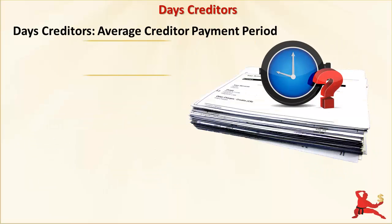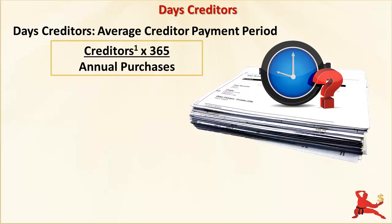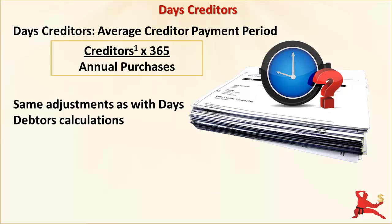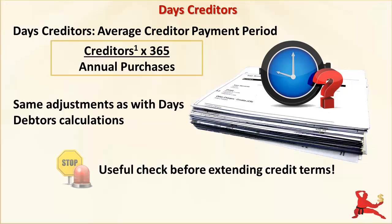Days creditors, which is also called days payables, tells you the average time that a business takes to pay its trade creditors. The calculation works the same way as days debtors except you are using trade creditors and purchases figures. You do the same adjustments like annualising purchases, using average creditors and adjusting for taxes like Goods and Services Tax or Value Added Tax. If a business is showing a very high days creditors number, it may be a sign of financial stress — that the business is stretching its creditors to manage its cash flow. If you are considering extending credit terms to a customer and you see a very high days creditors number, say more than 60 or 90 days or well above the industry average, you might want to consider whether this customer is going to be a problem account.